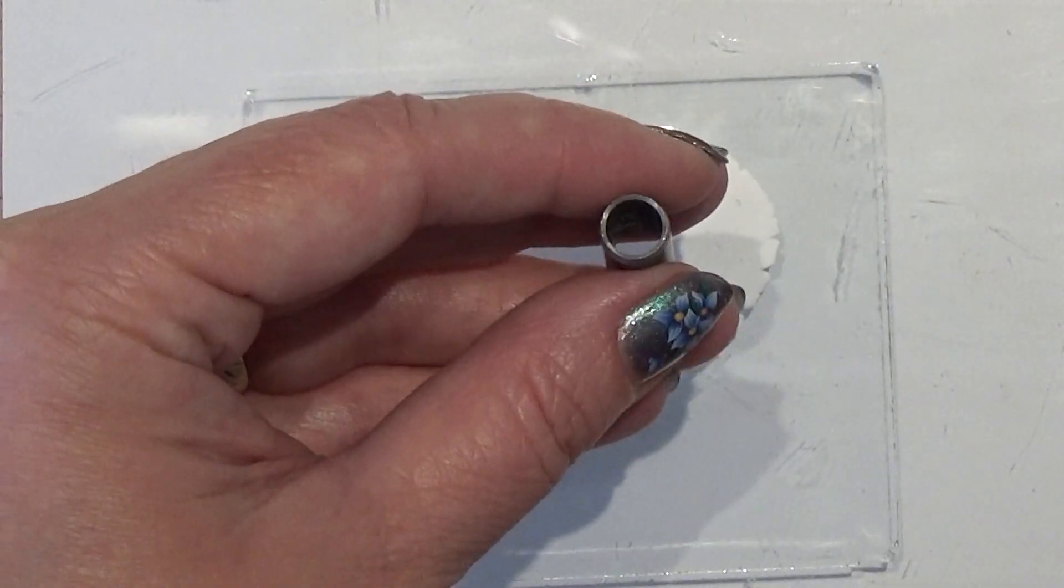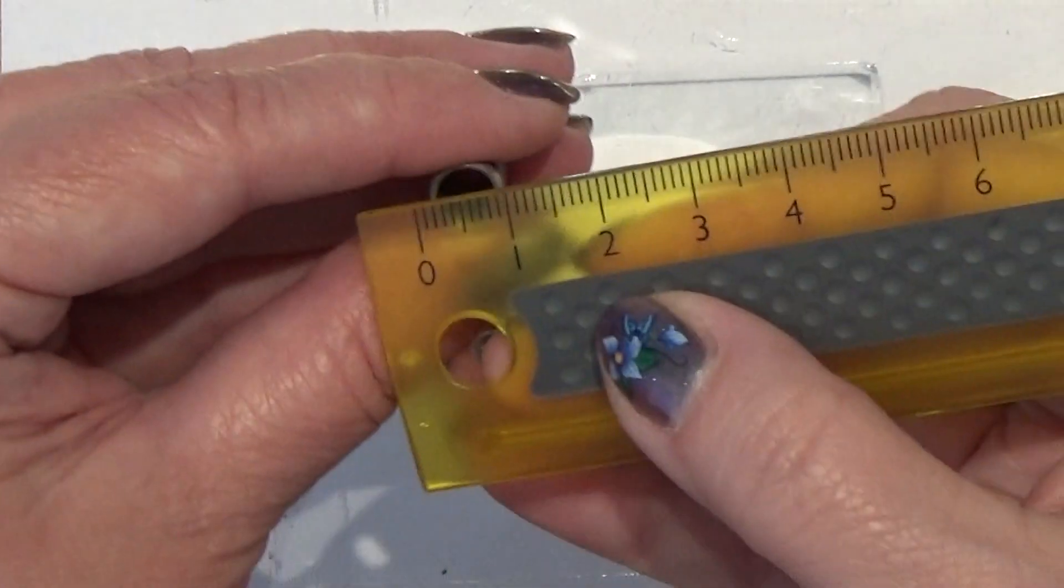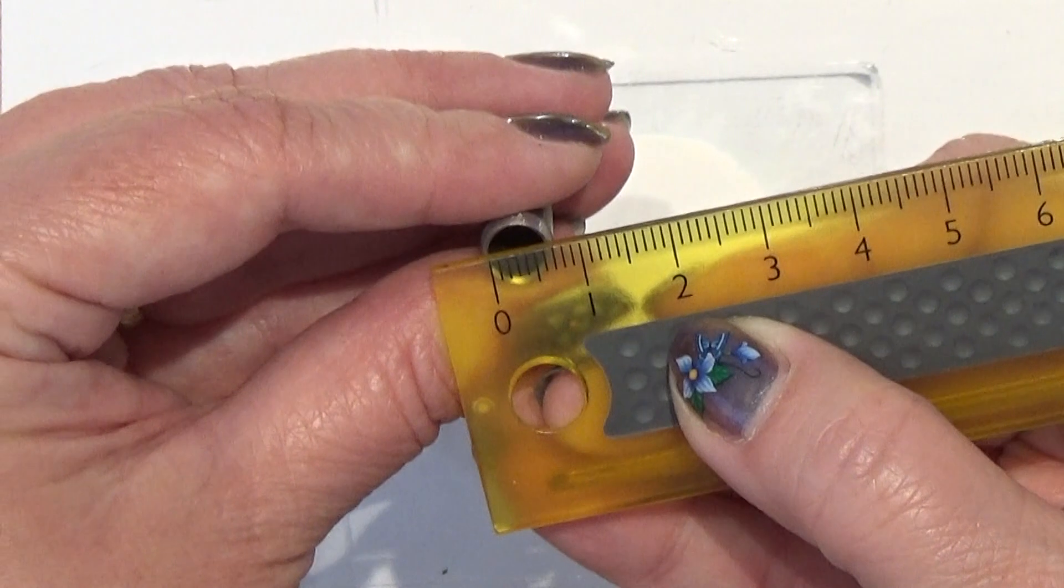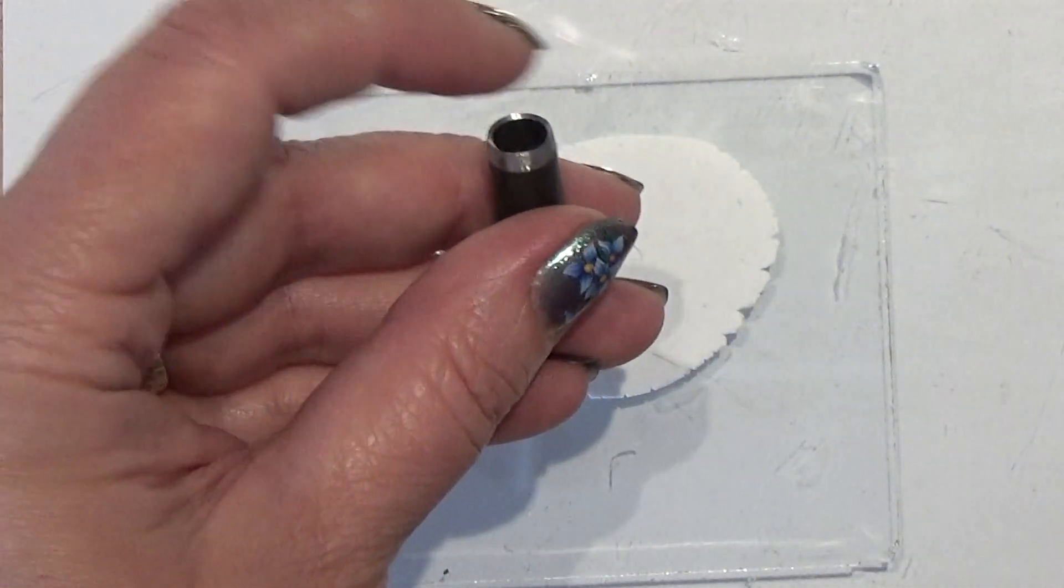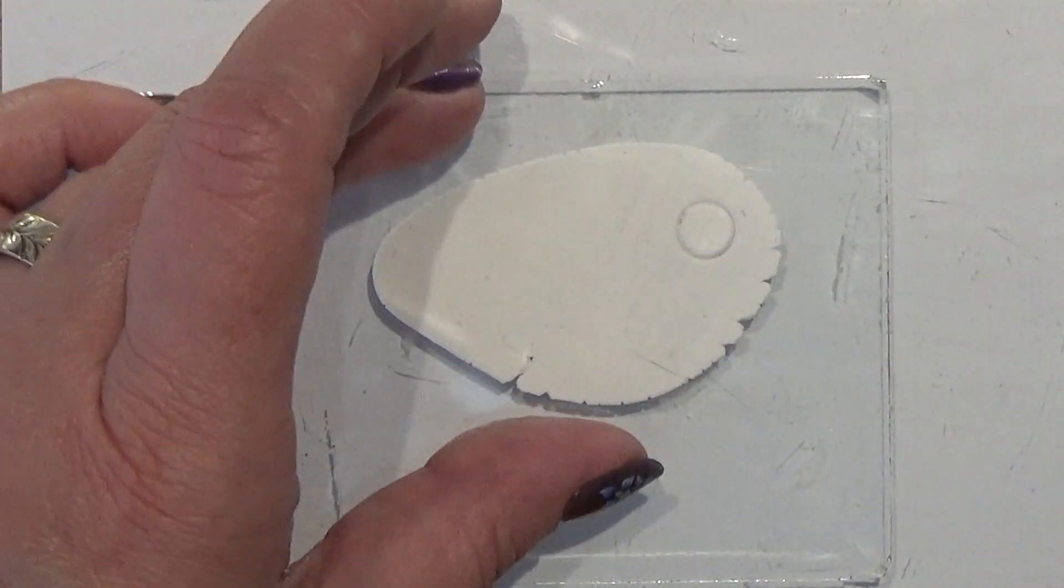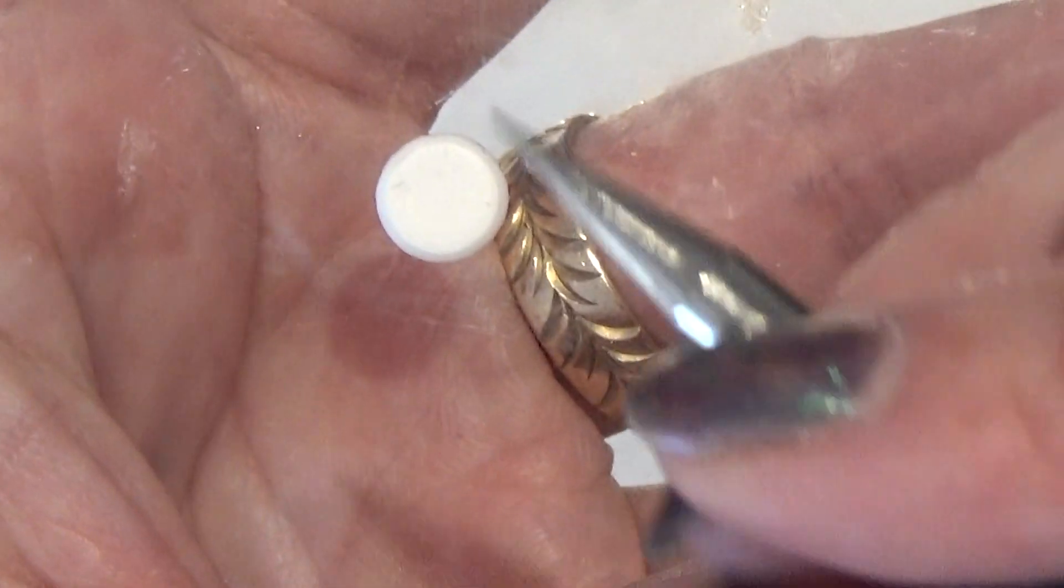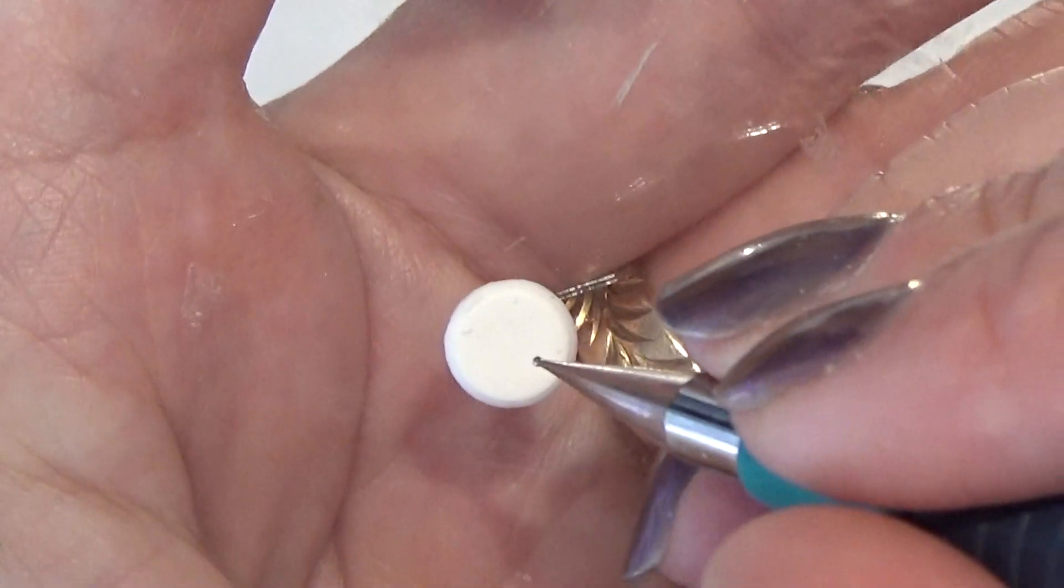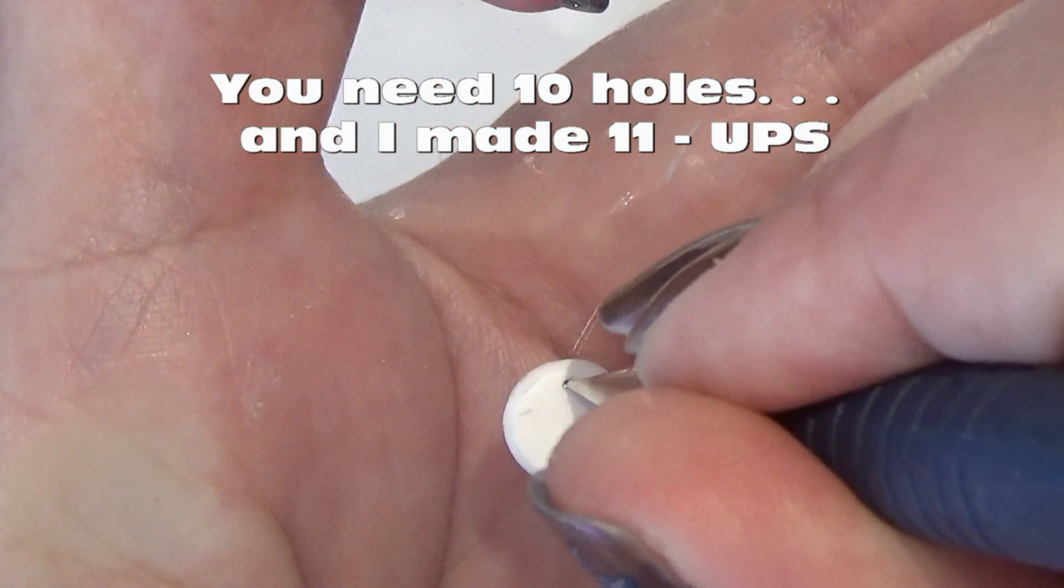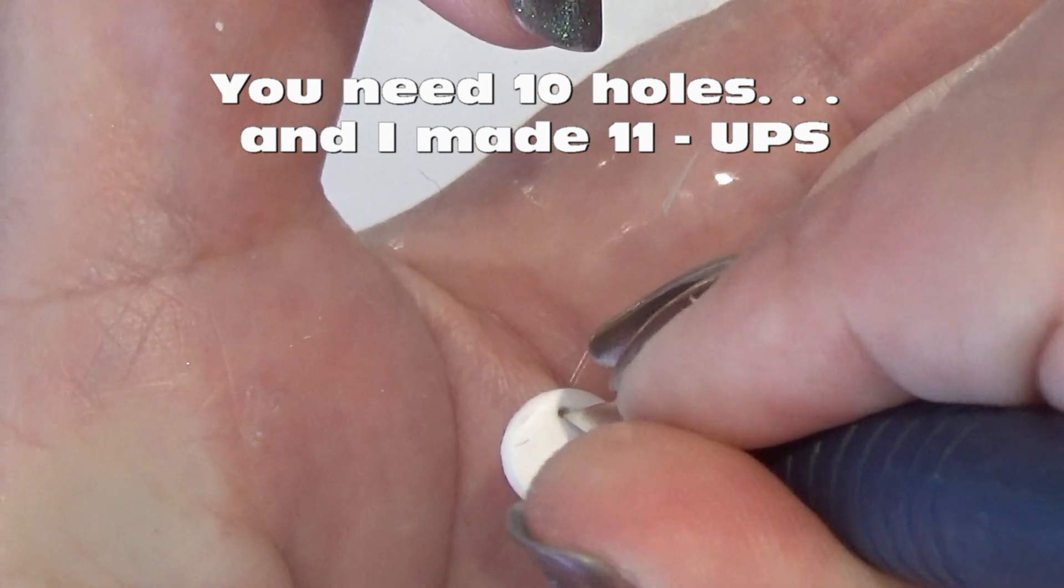I have this hole cutter that is 6mm wide and I'm going to make a circle with that one. Here I have the little circle and I'm going to make 9 holes in it. So first I'm going to make one at the top.